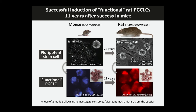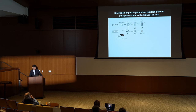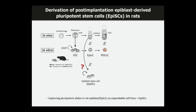We now have two validated models, and using both allows us to investigate conserved and divergent mechanisms during germline development across species. We next asked whether we can capture the pluripotent state of the in vivo rat epiblast or in vitro rat EpiLC as an expandable cell line — so-called epiblast stem cells (EpiSCs).